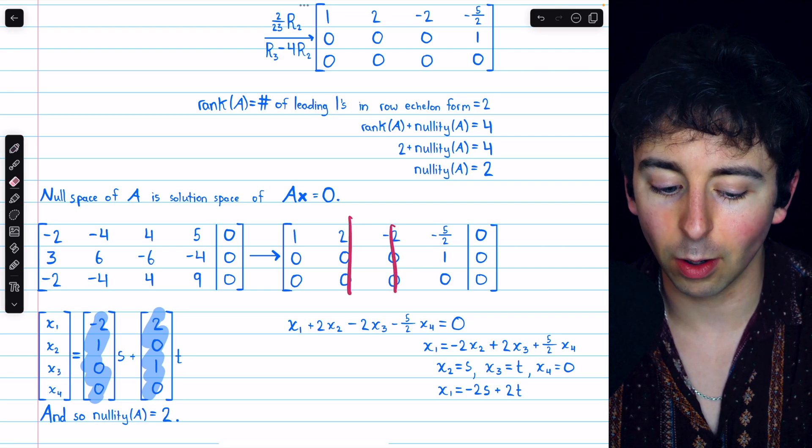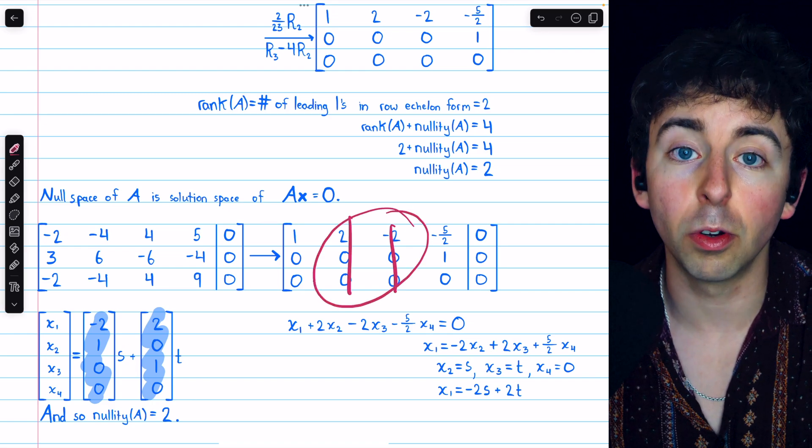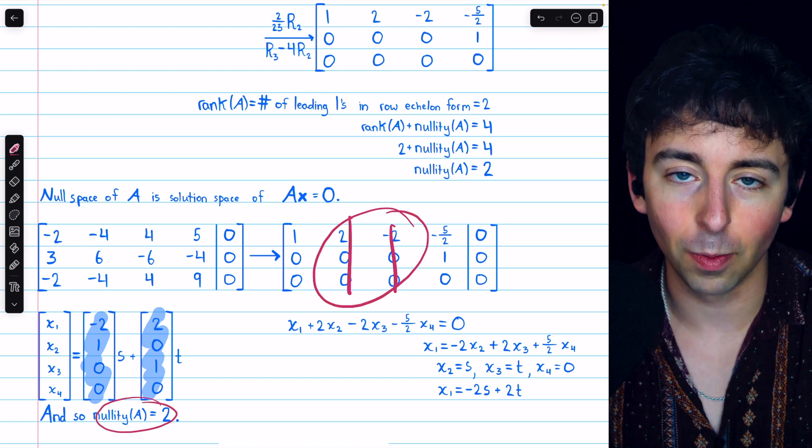And the number of parameters is the number of free variables, which is the number of columns minus those columns that have leading ones. So, just two columns, so two free variables, so two is the nullity.